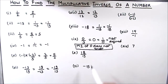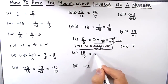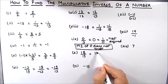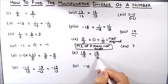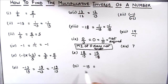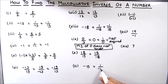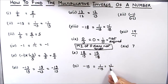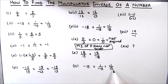The next number is 18 by 15 and its reciprocal will be 15 by 18. The next number is negative 15 and its reciprocal will be 1 by negative 15, or negative 1 by 15. So the multiplicative inverse is negative 1 by 15.